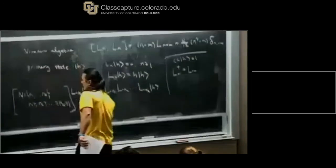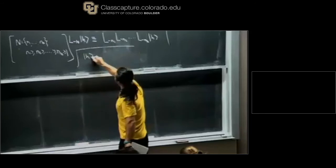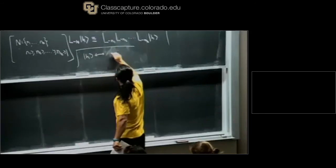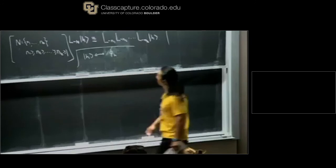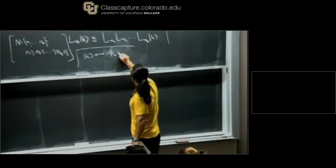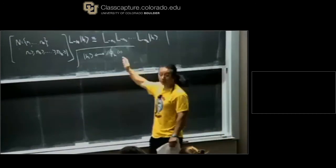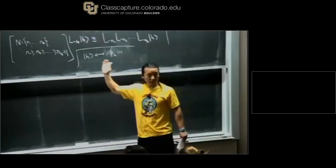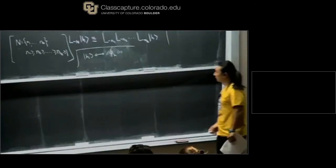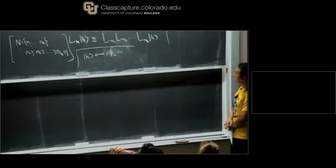Under the state-operator mapping, this primary state is mapped to a primary operator — let's call it φ — at the origin on the plane. Here I'm only keeping track of the holomorphic weights. There are also anti-holomorphic weights, which I will ignore for the moment, since I'm only discussing the holomorphic part of the Virasoro algebra.